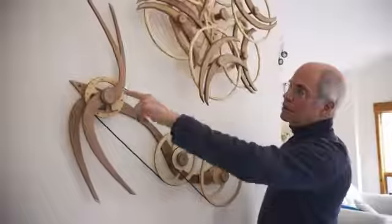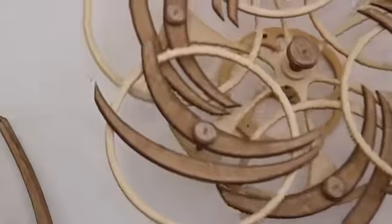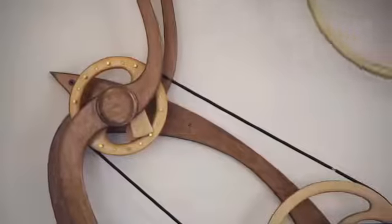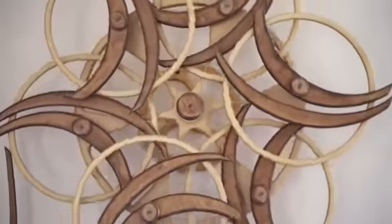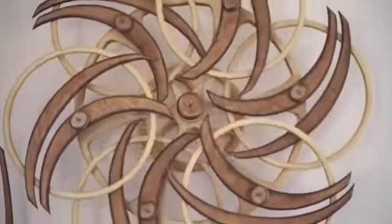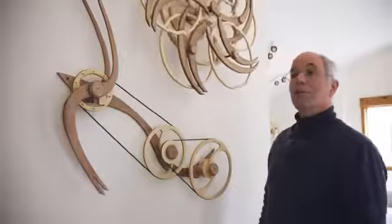This little lever now is pulling on that string, which is pulling on this wheel, which is pulling on this lever, which released the front lever, and now it's going to reverse direction and start the cycle again. Any questions?